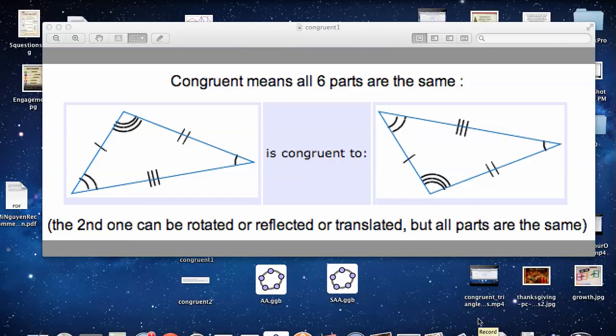Alright, we're talking about this congruent triangle concept where all six parts are the same, but we don't want to measure all six parts.